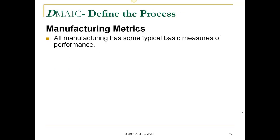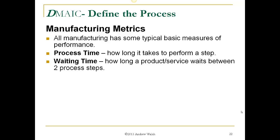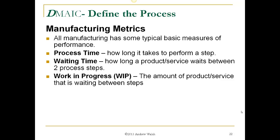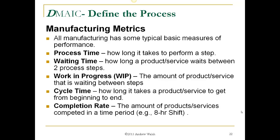Process capability indices compare the voice of the customer — what the customer wants, which is essentially your specifications — to the voice of the process: what the process is capable of delivering. These may not be the same thing. Manufacturing metrics include process time (how long a step takes), waiting time (how long product waits between steps), work in progress or WIP (the amount of product piling up between steps), cycle time (how long it takes from beginning to end), and completion rate (the amount of product completed in a certain time period, such as an eight-hour shift).